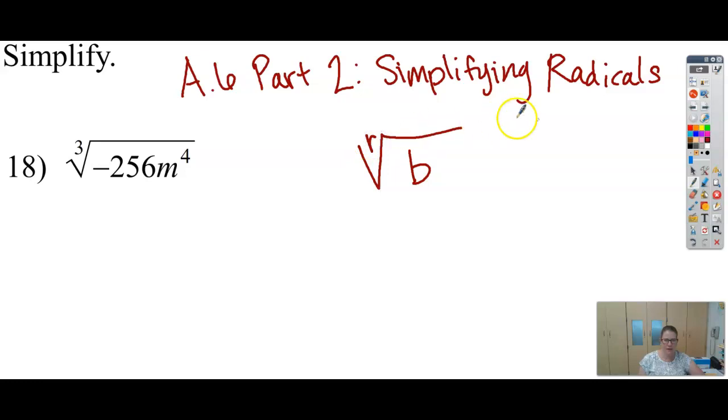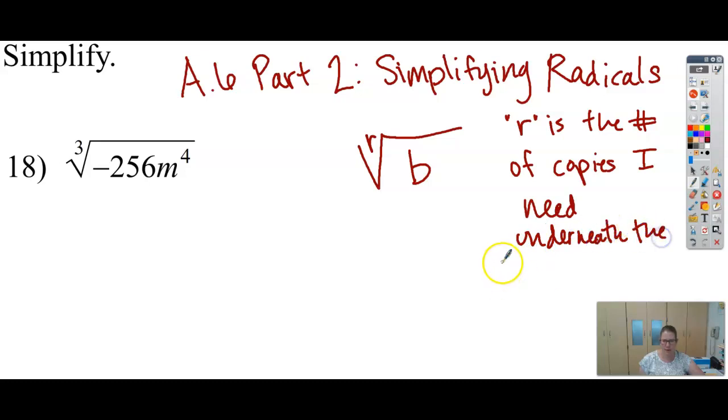So whatever r is, that's our root, right? That is the number of copies I need underneath the radical to bring one outside.